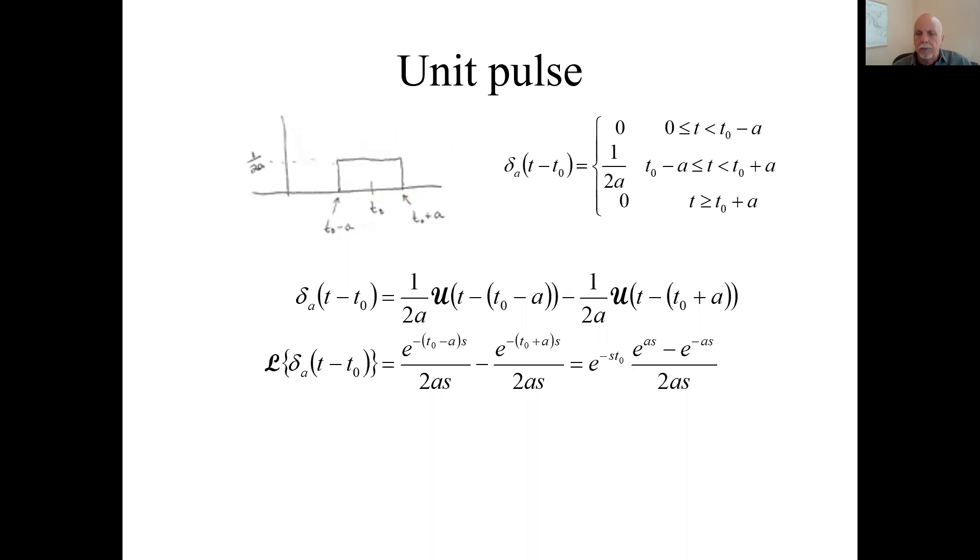Let's say it looks like this. It has a half width of A and we'll center it at T sub zero here. We'll define it this way, so it's an impulse. We'll call it delta sub A. A is the half width, centered at T sub zero. We'll have a total width of 2A. We want the area under that curve or inside that pulse to be one, a unit pulse. So the height is one over 2A, and the area of this rectangle is one.